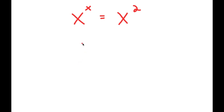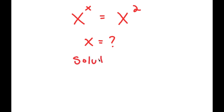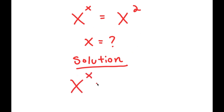In this video, I'm going to be solving the equation x to the power of x is equal to x to the power of 2. My only variable in this equation is x, so that's obviously the variable I'm going to be solving for. Now for my solution — I'm going to first write my equation down here: x to the power of x is equal to x to the power of 2.